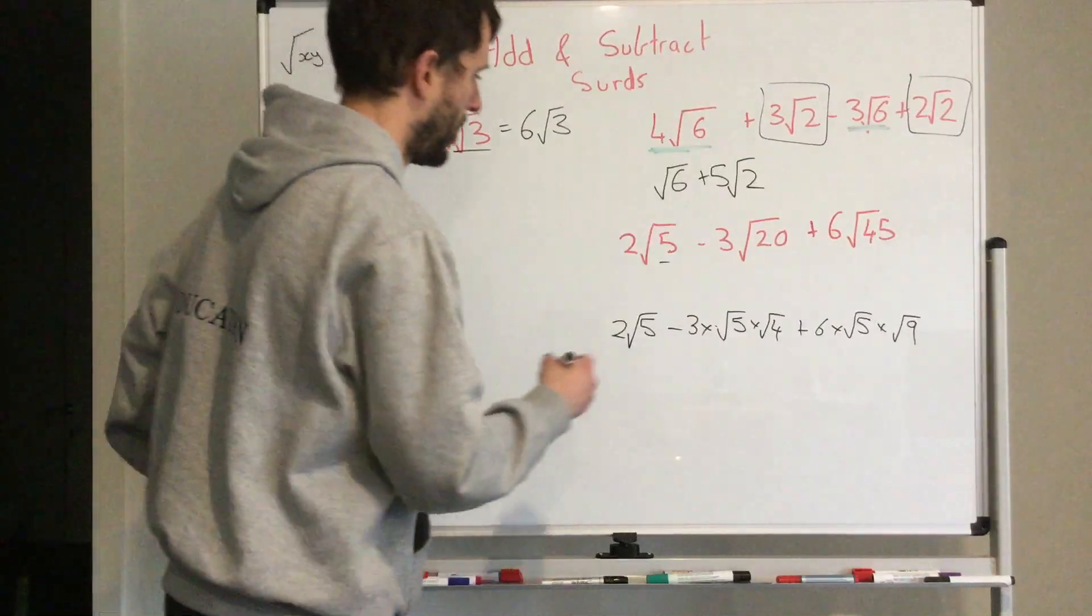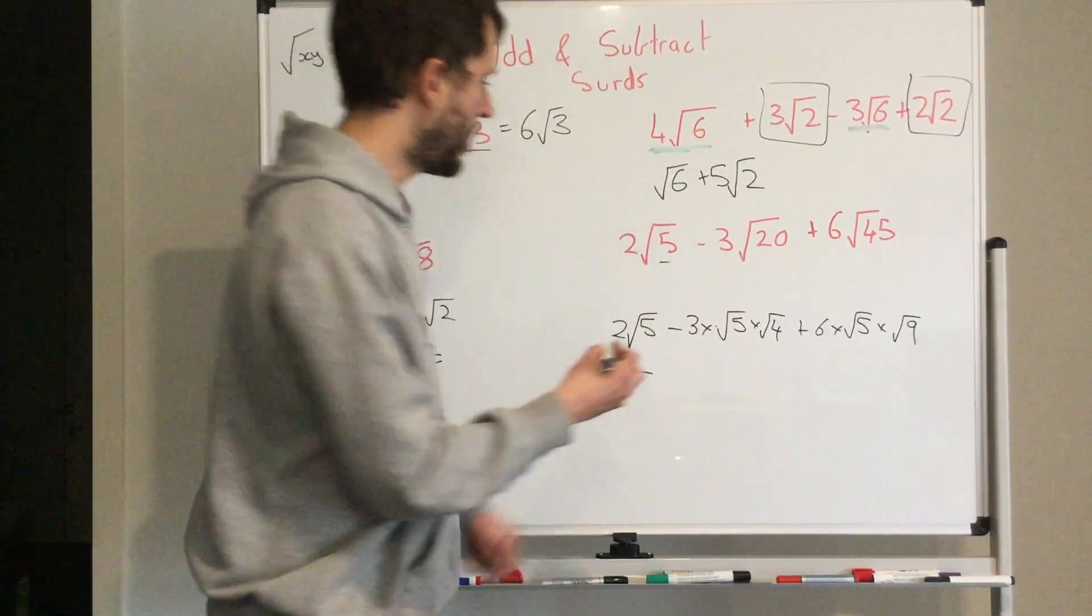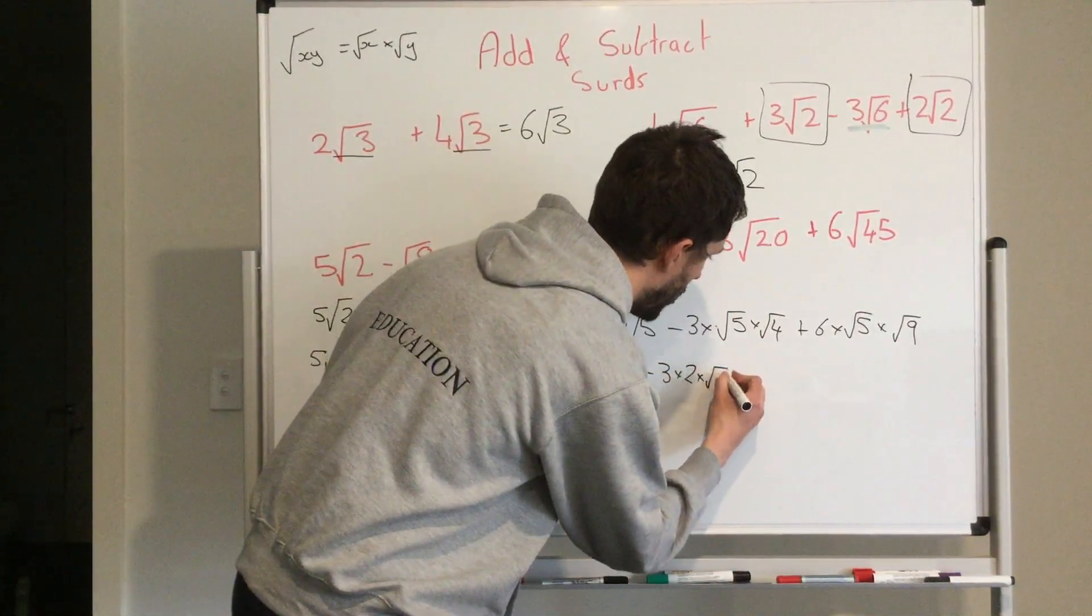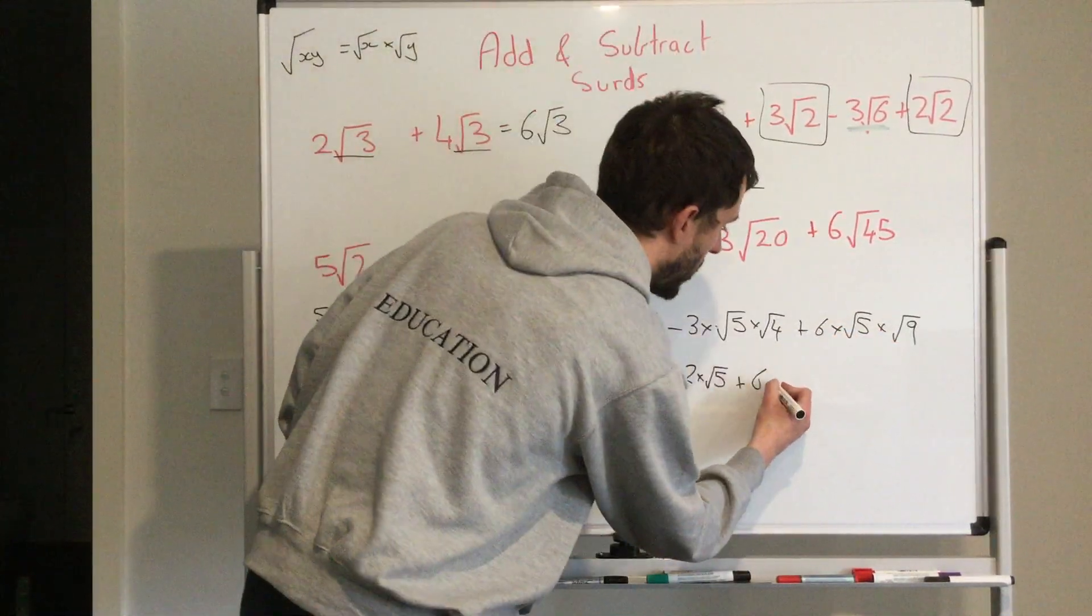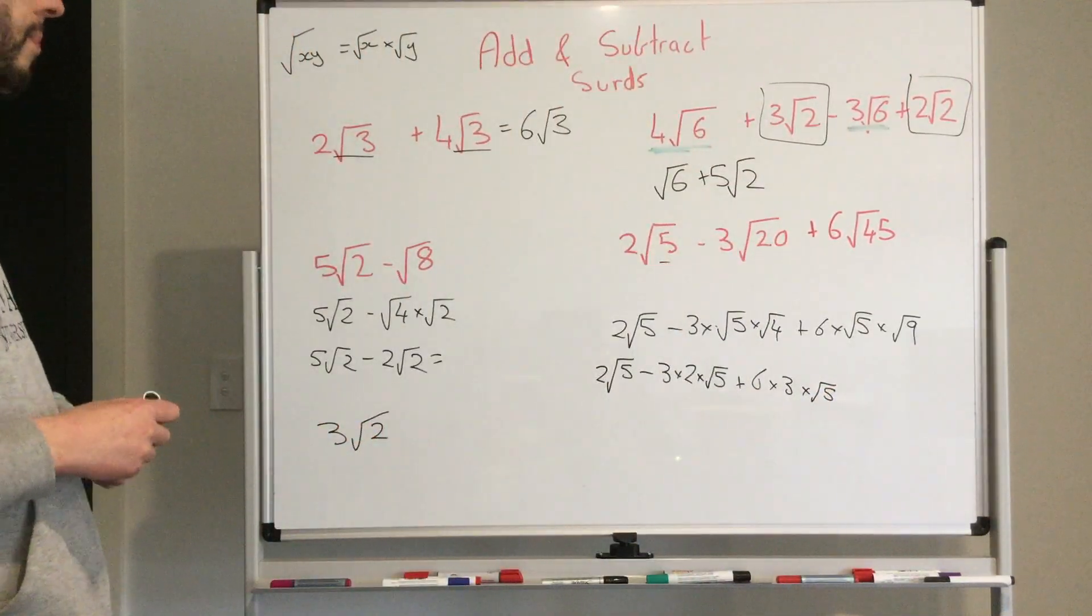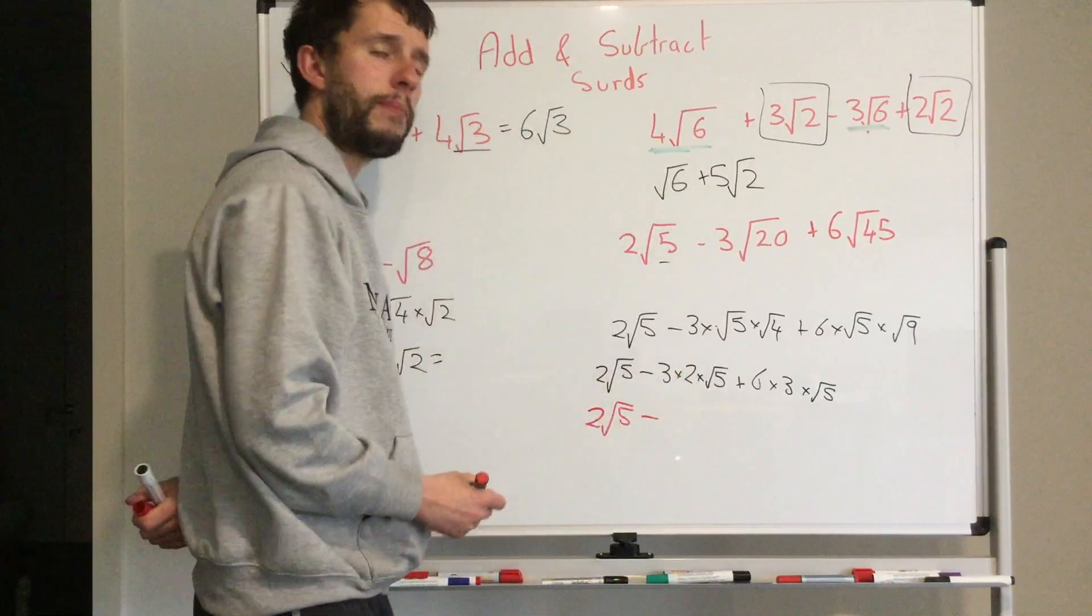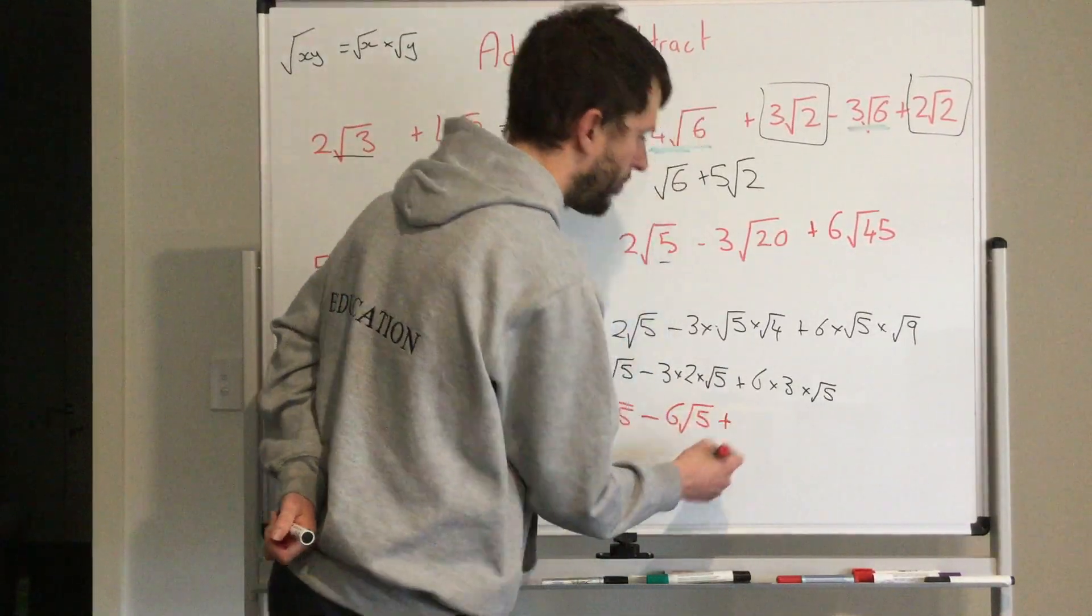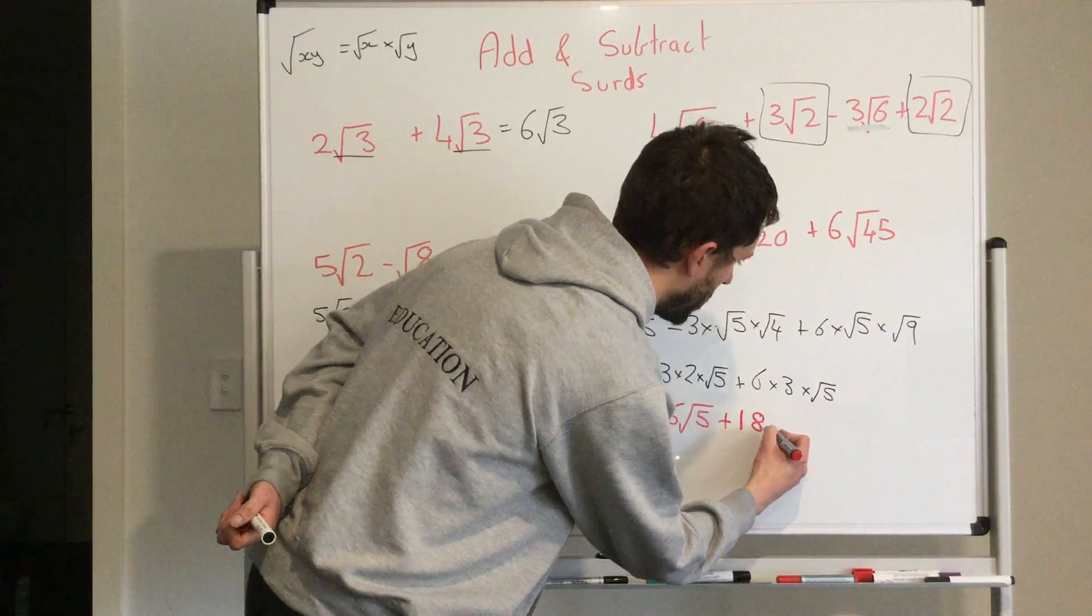Now I can simplify. I've got 2 square root of 5. I've got here 3 times the square root of 4 is 2 times the square root of 5. Plus I've got 6. Square root of 9 is 3. So it's times 3 times the square root of 5. Now let's try and simplify this a bit more. I'm going to change colors so that way it's easier for you to see. So I've got 2 square root of 5. 2 times 3 is 6. So it's 6 square root of 5. Plus 6 times 3 is 18. Square root of 5.